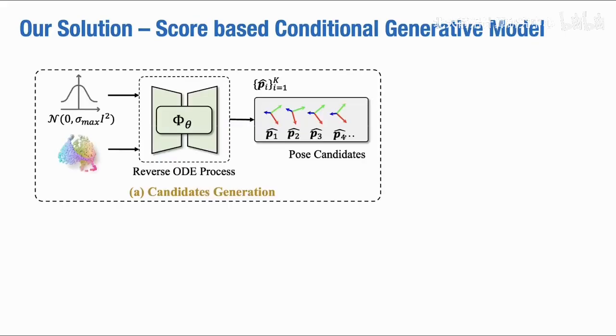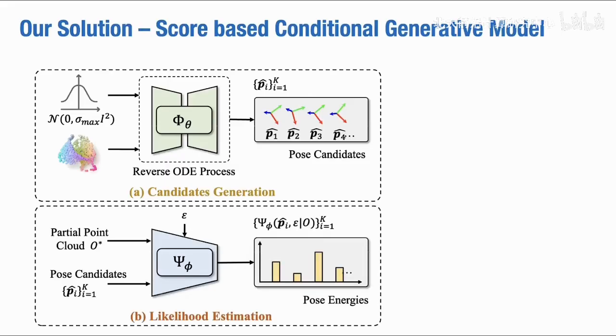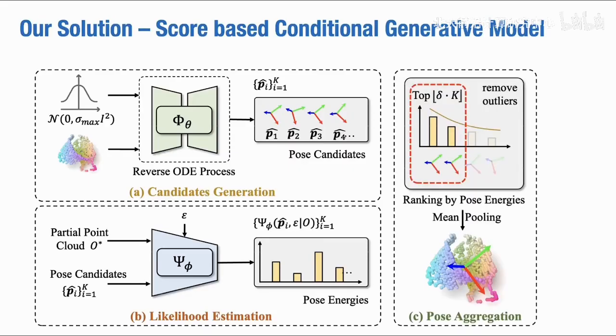During inference, given an unseen point cloud, we first sample a group of pose candidates via the score model. Then, we estimate the likelihoods for the candidates via the energy model. Finally, we rank the candidates with the energies and filter out low-ranking candidates.